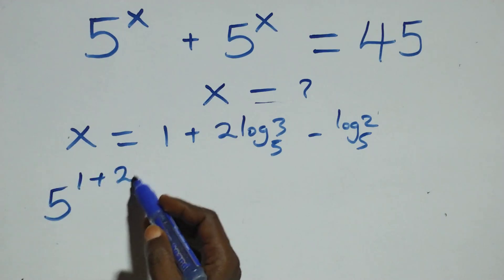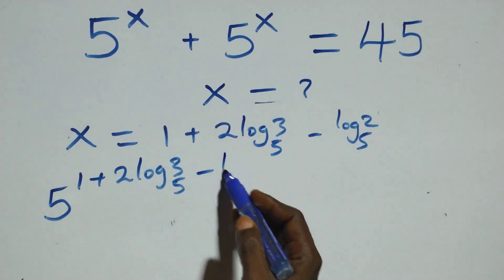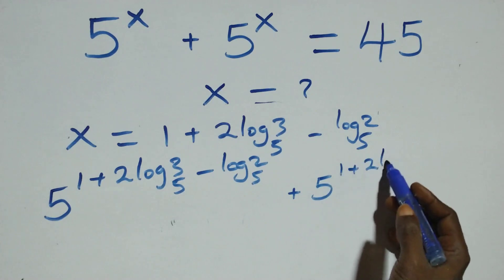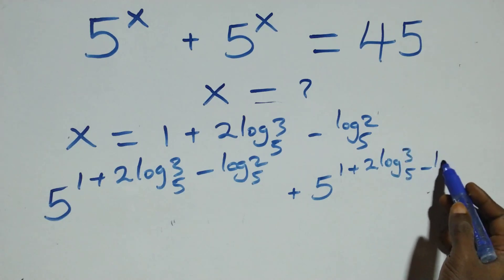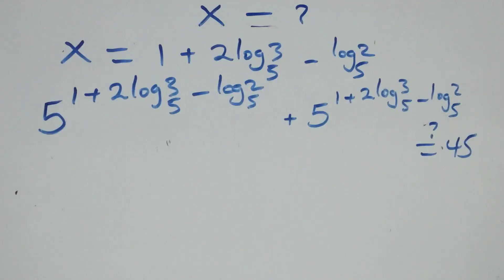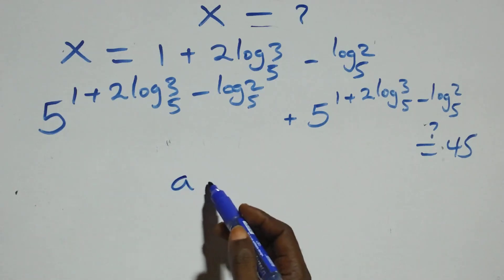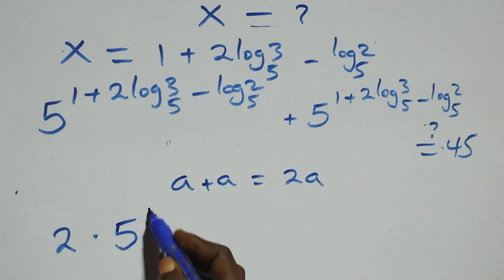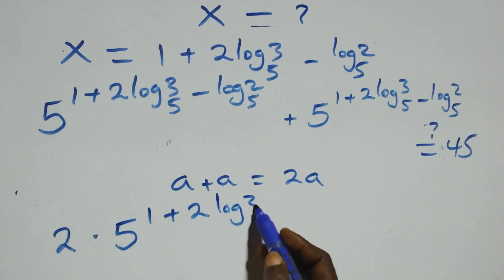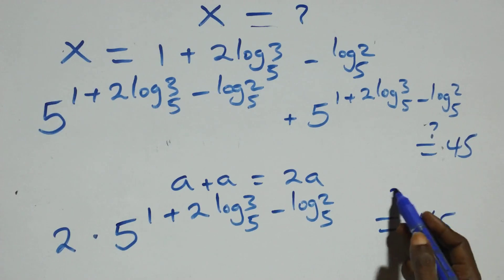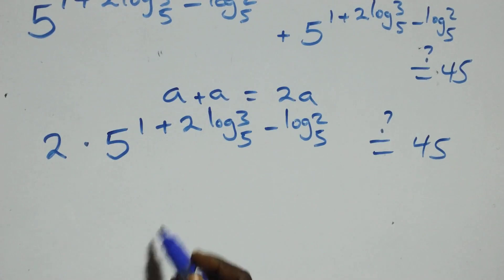Substituting x equals 1 plus 2 log 3 base 5 minus log 2 base 5 into the original equation, we get 5 raised to power (1 plus 2 log 3 base 5 minus log 2 base 5) plus 5 raised to power (1 plus 2 log 3 base 5 minus log 2 base 5) equals 45. Since we are adding the same thing twice, this equals 2 times 5 raised to power (1 plus 2 log 3 base 5 minus log 2 base 5) equals 45.